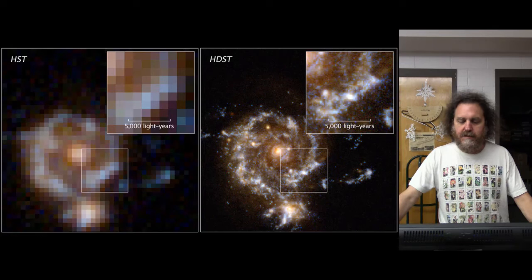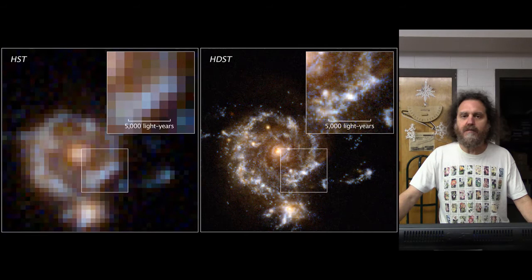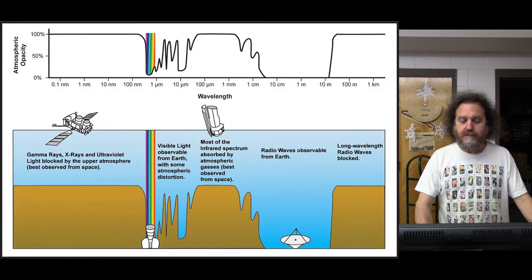You can see the difference between two telescopes here. Here's a picture of a galaxy taken with a smaller telescope, and another one taken with a larger telescope. You can see more detail, make out more individual stars and stuff, and you can study it in more detail.